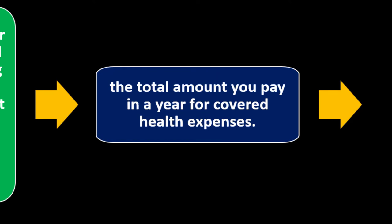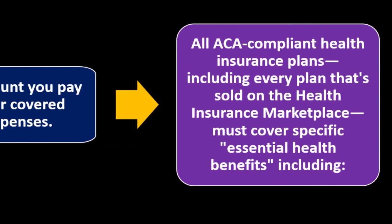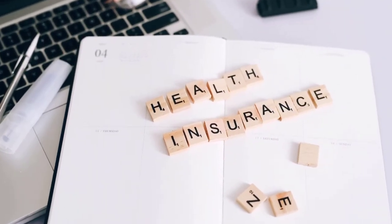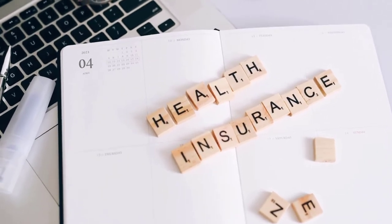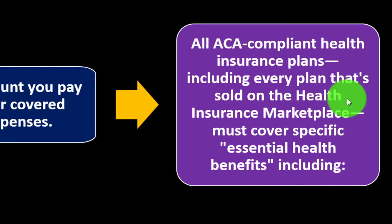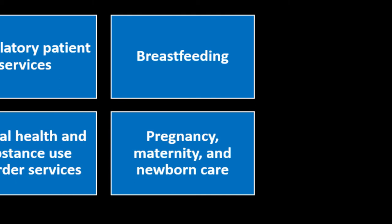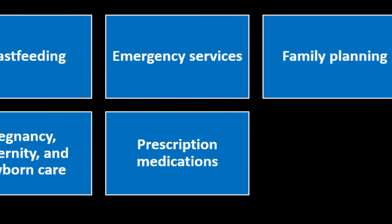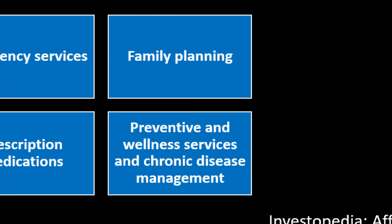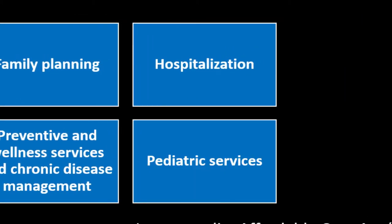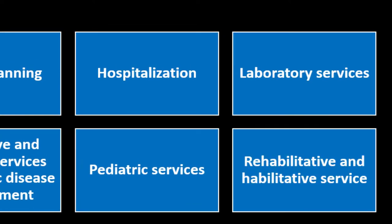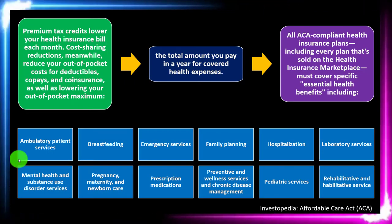All ACA-compliant health insurance plans, including every plan sold on the health insurance marketplace, must cover specific essential health benefits, including ambulatory patient services, mental health and substance use disorder services, breastfeeding, pregnancies, maternity and newborn care, emergency services, prescription medications, family planning, preventive and wellness services and chronic disease management, hospitalization, pediatric services, laboratory services, and rehabilitative and habilitative services.